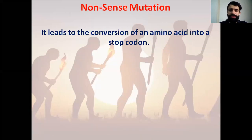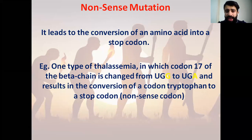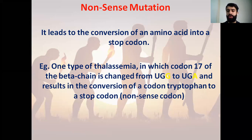Non-sense mutation leads to the conversion of an amino acid into something known as a stop codon, meaning that the amino acid sequence is going to stop and the protein is going to be smaller. So one type of thalassemia in which codon 17, which codes for the beta chain, is changed from UGG to UGA — this refers to the conversion of the codon for tryptophan into a stop codon, which is also called a non-sense codon.